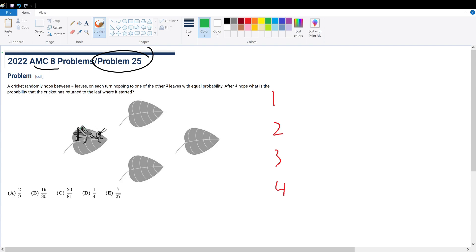So for the first case, the cricket can hop here. We can see that it has to hop to these two leaves, so the probability of this happening is just one. It doesn't really matter which leaf it hops to.